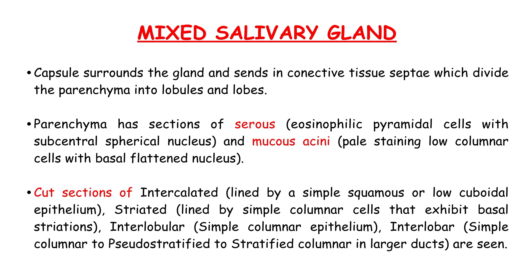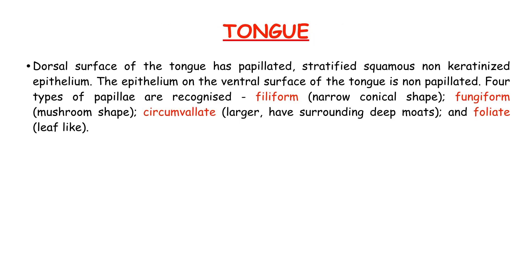Striated ducts are lined by simple columnar cells that exhibit basal striations. Interlobular ducts have simple columnar epithelium, and interlobar ducts transition from simple columnar to pseudostratified to stratified columnar epithelium in the larger ducts.